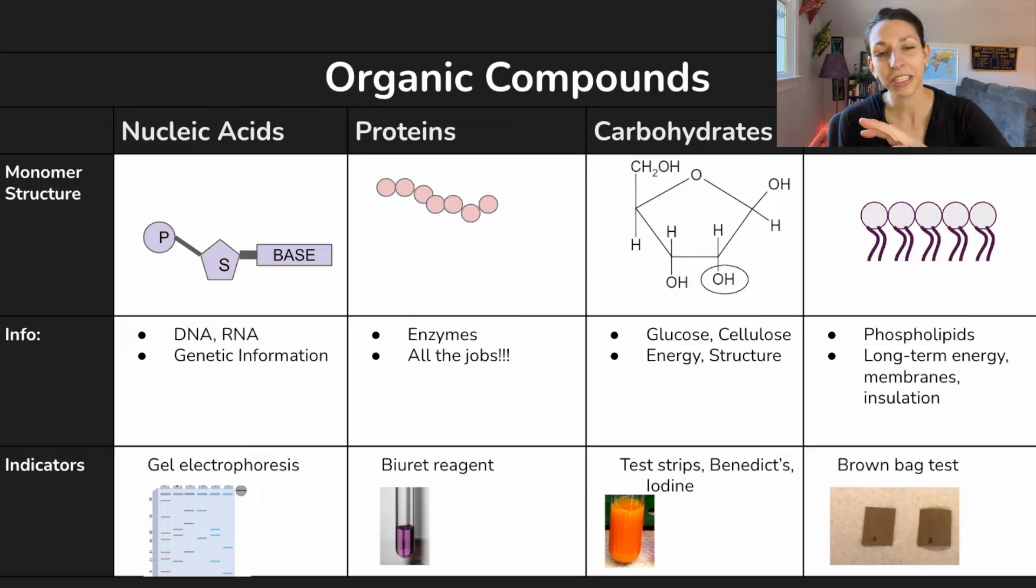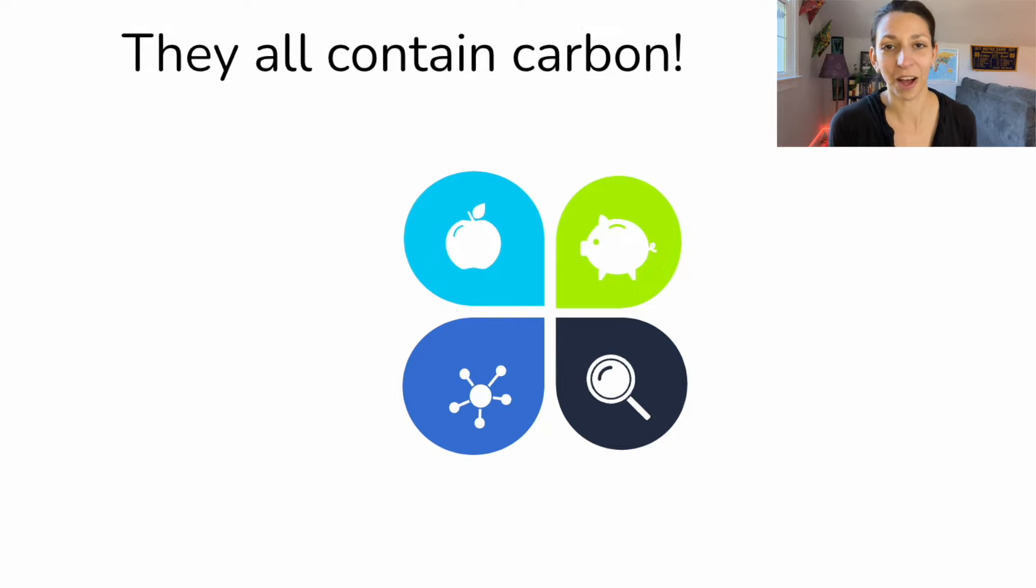All right, one thing these things all have in common, despite their different functions and structures, is they all contain carbon. That's why they're called organic compounds sometimes. And they also contain hydrogen and oxygen. Now they have other elements present in them as well, but they all contain carbon, hydrogen, and oxygen.